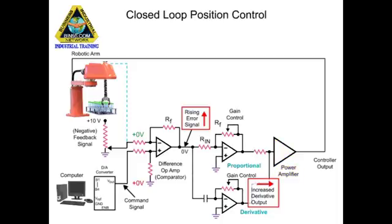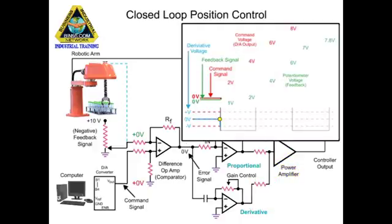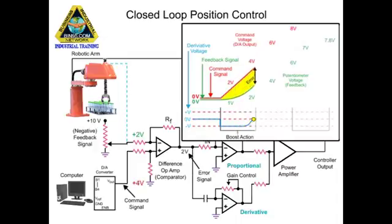The sum of both voltages is applied to the power amp, which results in the robotic arm accelerating at a similar rate to the changing command signal. The error becomes constant when the voltage from the potentiometer indicates that the robotic arm position is changing at a constant rate of the command signal. At this time, the derivative voltage changes to zero volts and the proportional amplifier continues to produce a voltage.